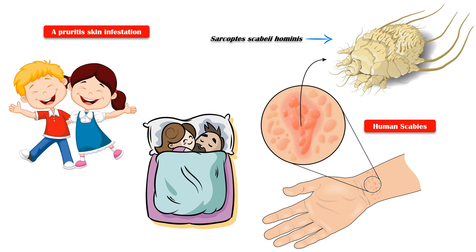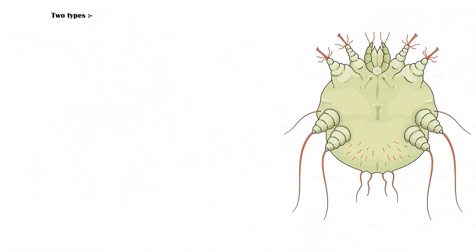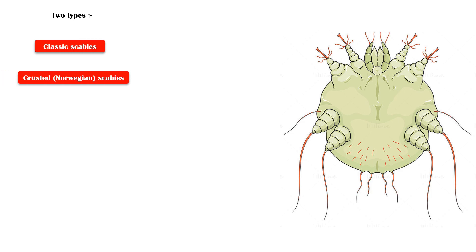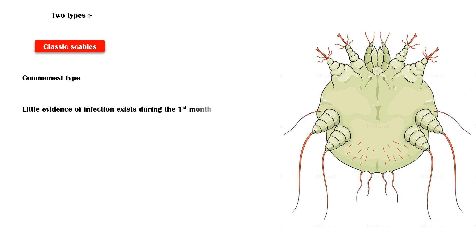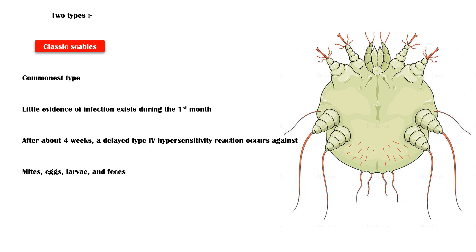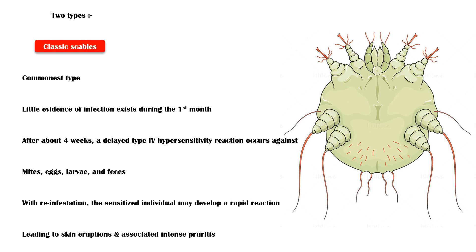There are two main types of scabies: classic scabies and crusted or Norwegian scabies. Classic scabies is the commonest type. There is little evidence of infection during the first month. After about four weeks, and with subsequent infections, a delayed type 4 hypersensitivity reaction occurs against mites, eggs, larvae, and feces of scabies. With re-infestation, the sensitized individual may develop a rapid reaction, usually within hours, leading to skin eruptions and associated intense pruritus, which are the hallmarks of classic scabies.